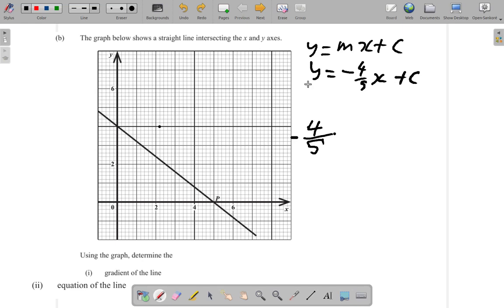What is c? Well, c would be right here, where you see the line intersects the y-axis. So, where is it? It's zero, one, two, three, four. It would be at four. So, c is four.